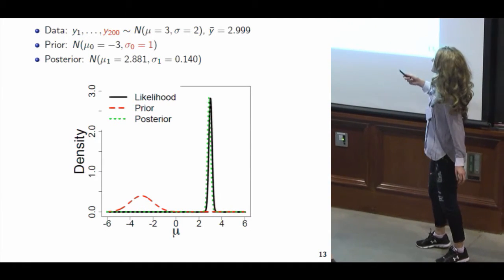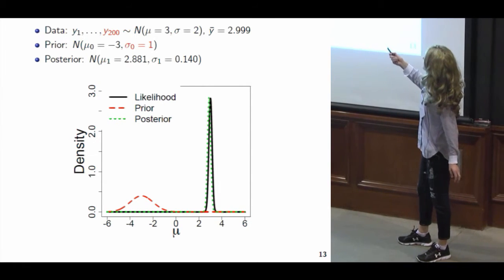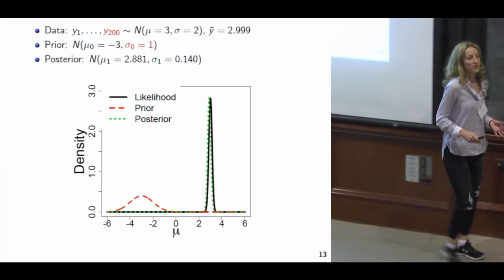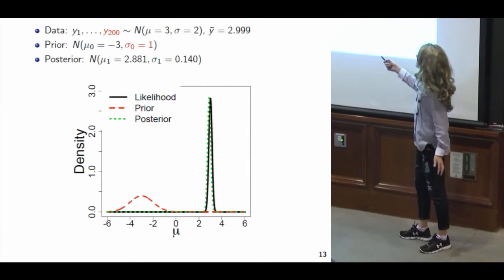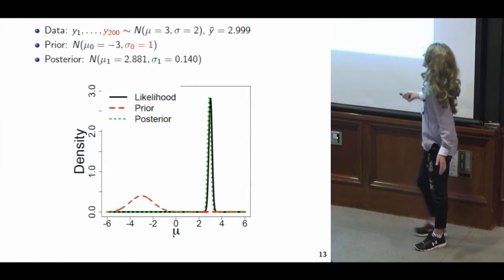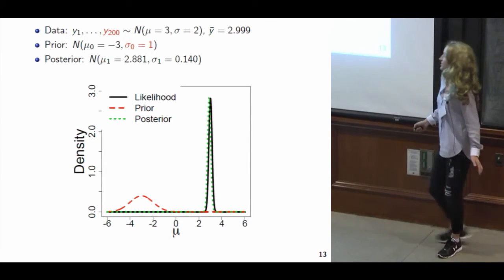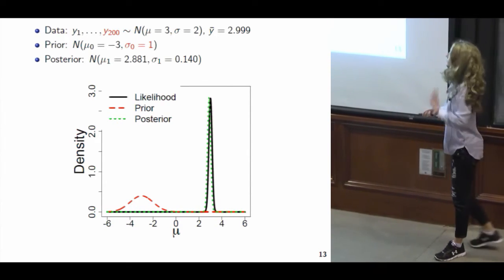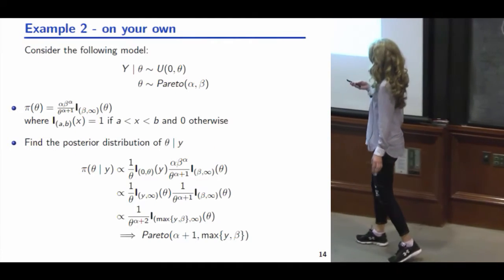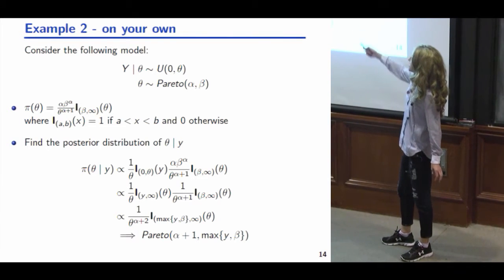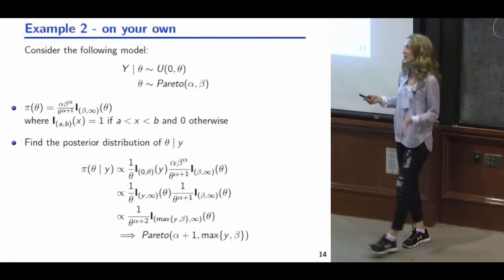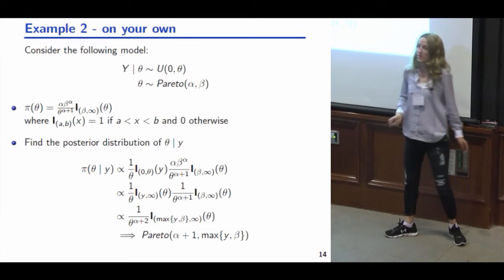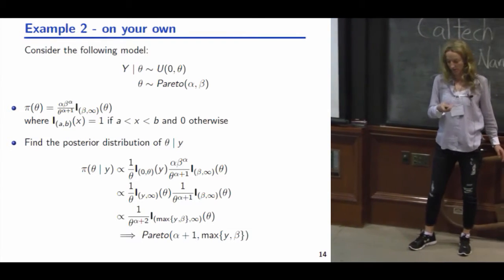If you have the same prior but a lot more data, the data will start to overwhelm the prior in many cases. With a large sample, the likelihood or the data has a strong effect even with a somewhat informative prior. If you have a small sample size, you should be especially careful. Here is another example with a uniform distribution between 0 and theta with a particular prior on theta — you can work through those details on your own.